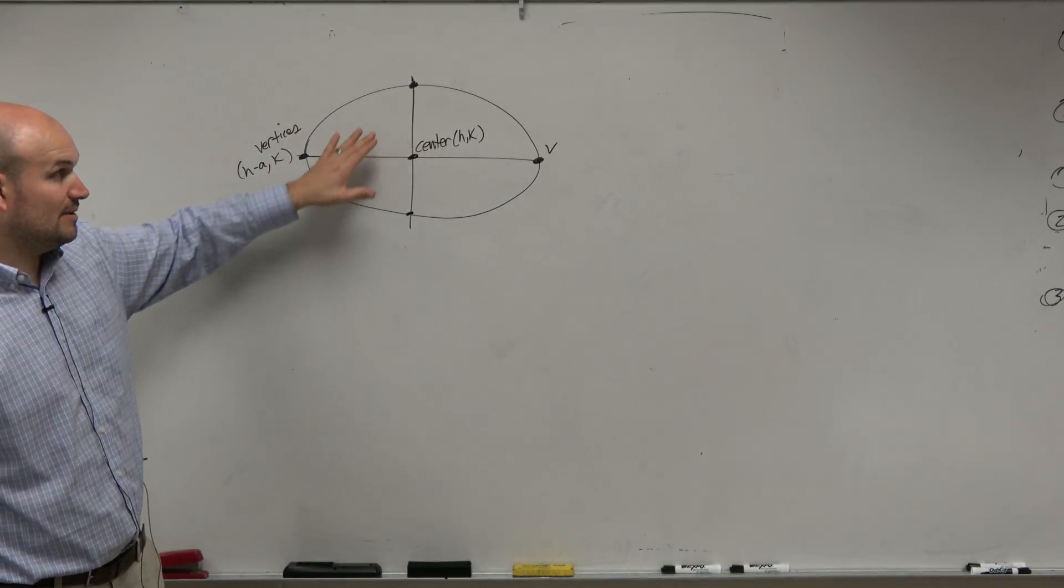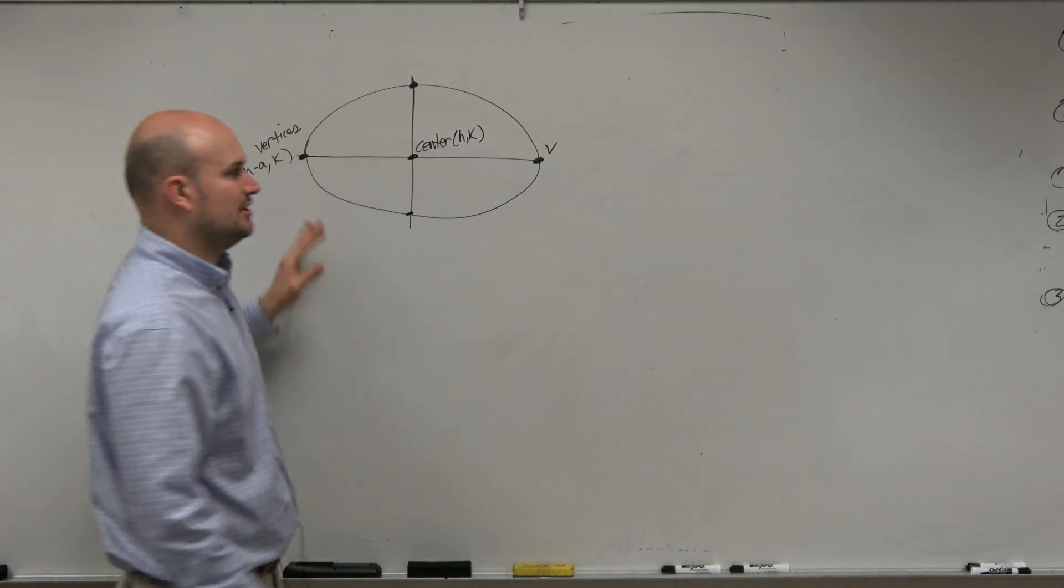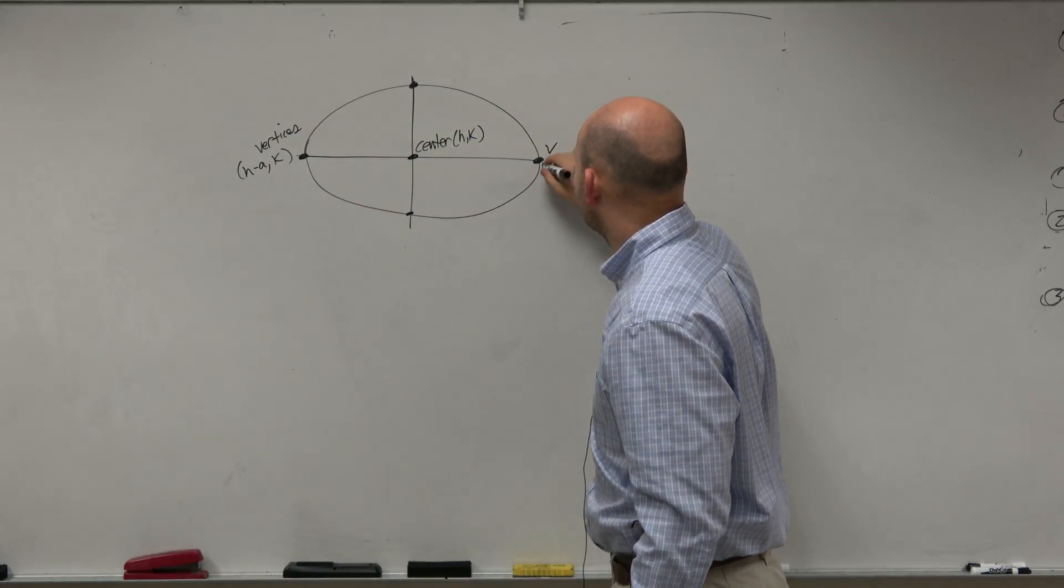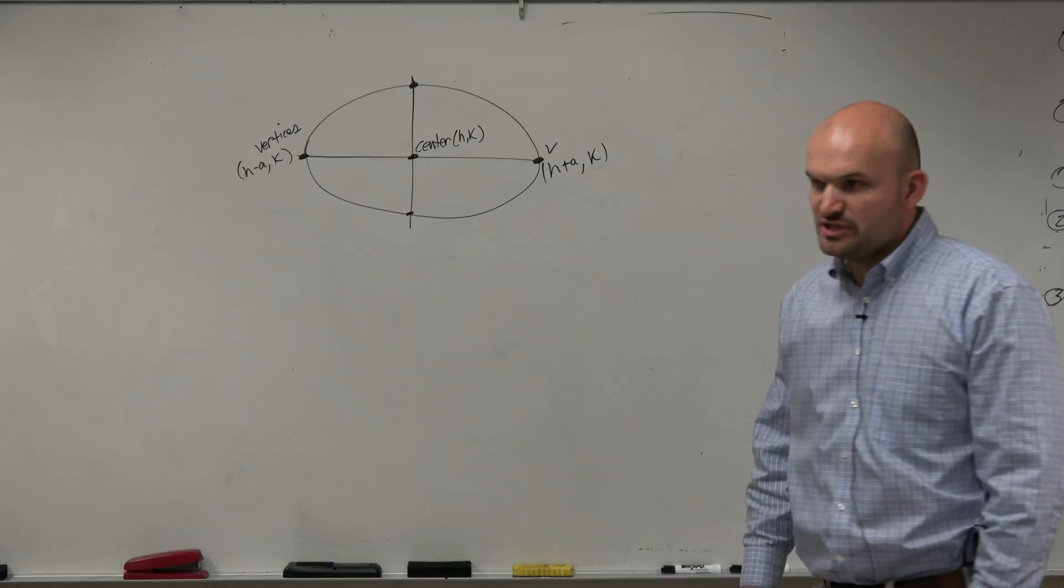Because that's like moving it to the left. You don't want to do it to k, because that's up and down. You want to do it to your h. Over here, I would have h plus a comma k. So those are like your two vertices.